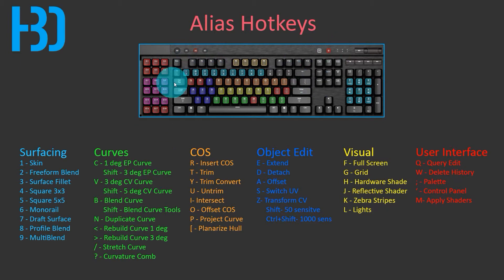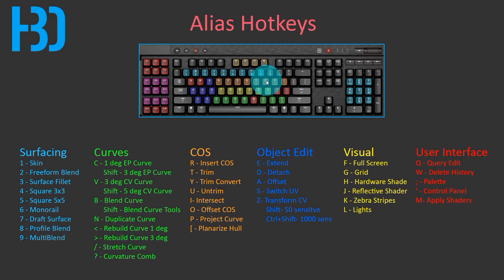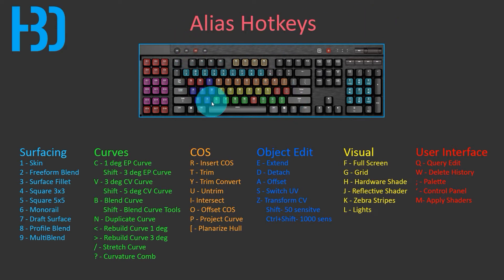For example, a lot of my curve on surface tools — all the orange ones — P is for project, T is for trim, U is to untrim, I is to intersect, O is to offset a curve on surface, F is for full screen, and G is for grid.